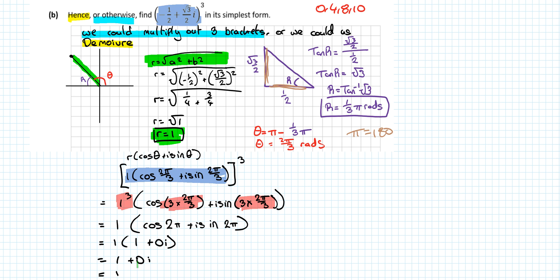That gives us one plus zero i. Could it go simpler? Yes — it's just one. If the question had said 'a plus bi' you would leave it as one plus zero i, but it says 'in its simplest form', so you just write one. It's a really short video because you'll have to go look at the proof separately. Do have a look — it's not that hard. I'd also recommend revising proof by induction before looking at the proof of De Moivre's theorem. Focus on the steps, which I outline in the other video. Have a look at the link in the description below.